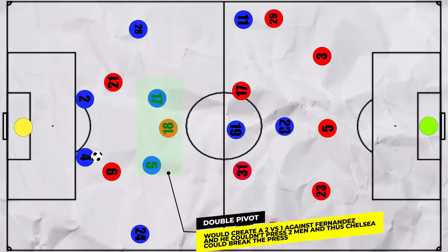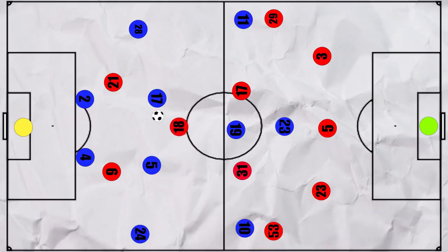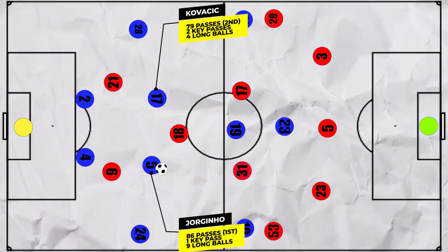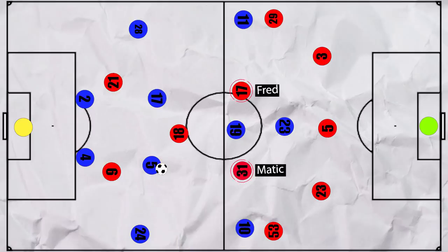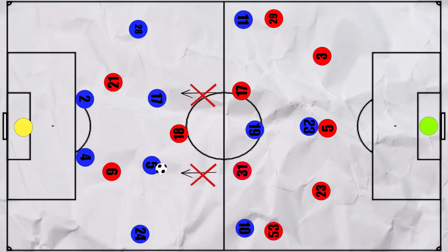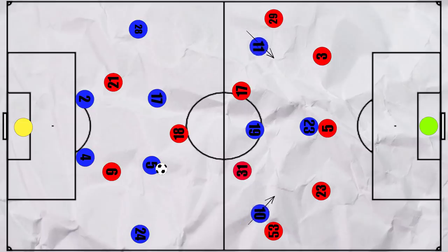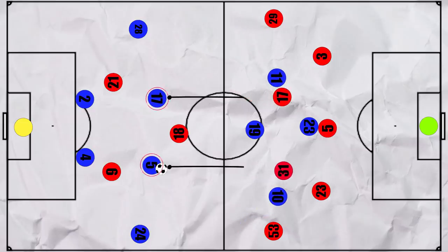Both Kovacic and Jorginho are press-resistant, meaning they could hold onto the ball, allowing them to play around Fernandes, and both midfielders had a large impact on the game. United's double pivot couldn't always back up the press, as Mount would move into dangerous positions. Additionally, both Pedro and Willian could come narrow, giving Jorginho and Kovacic more time on the ball.